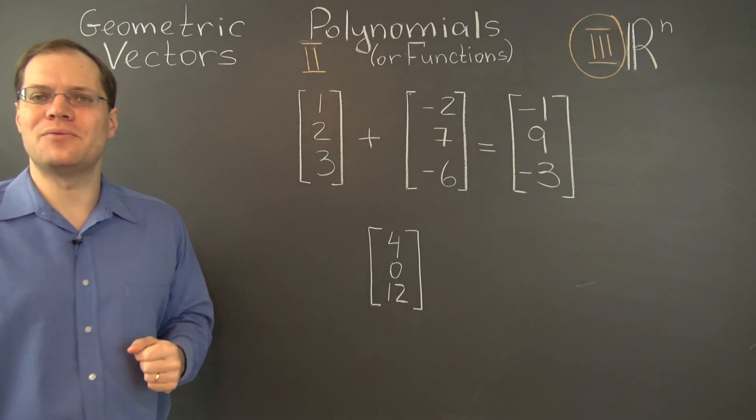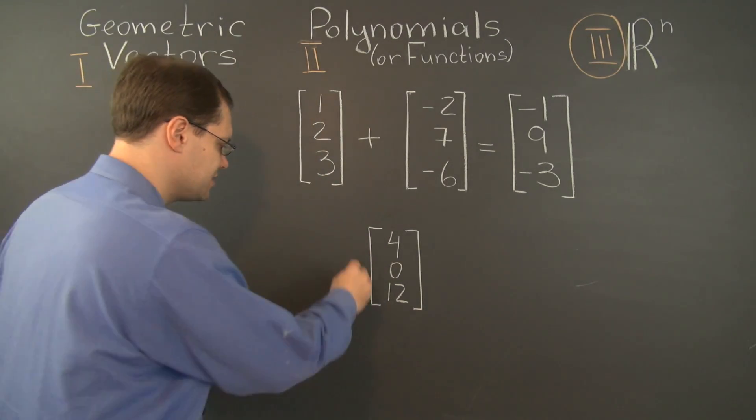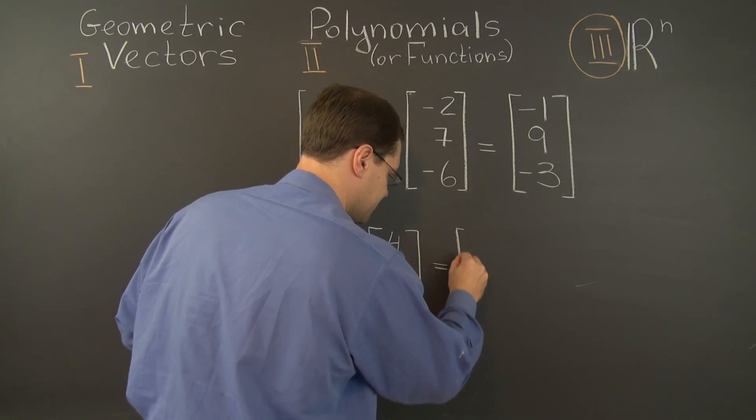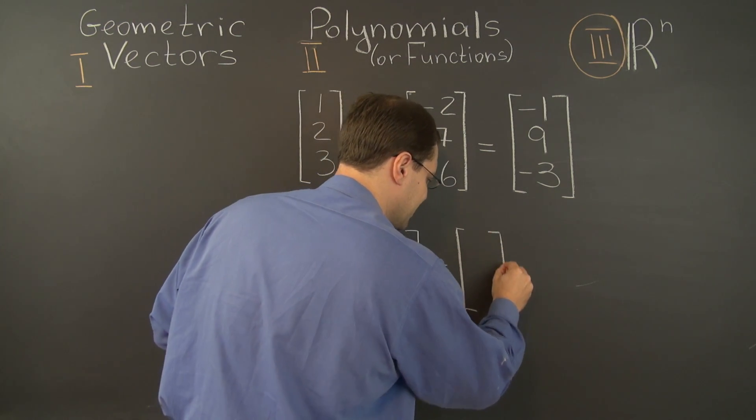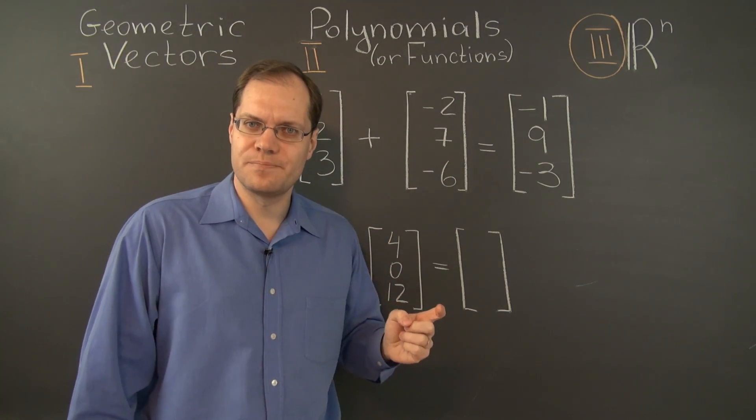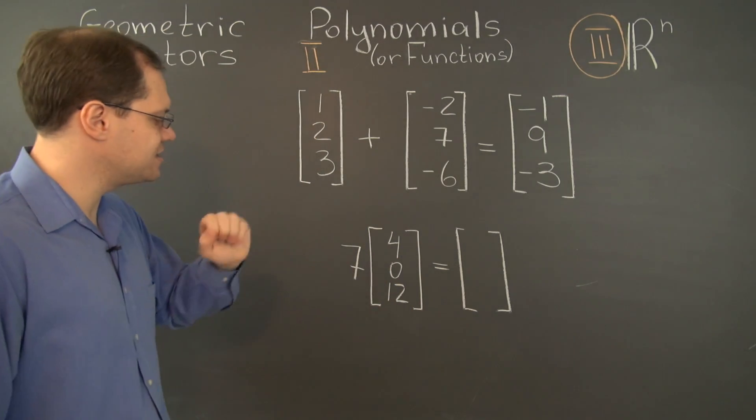Now let's multiply one of these elements by a number. Pick a number—seven, one of my favorites. When you multiply an element of R^3 by a number, you have to multiply every entry of that triplet by the same number.